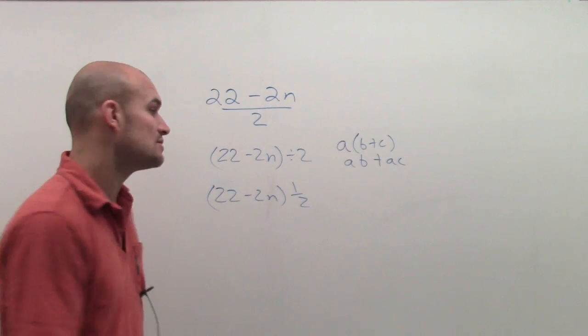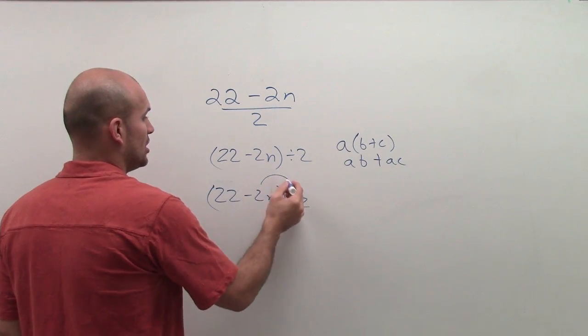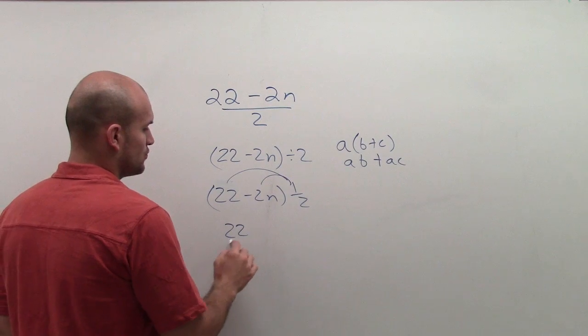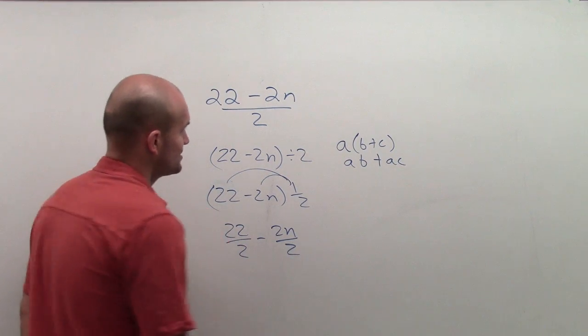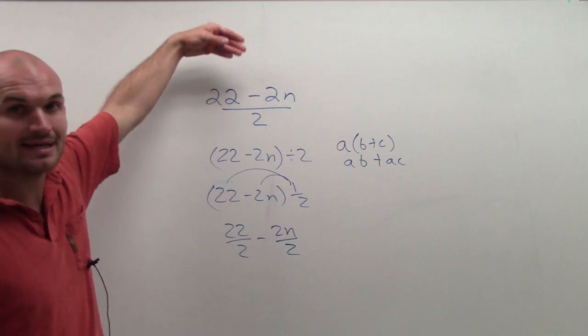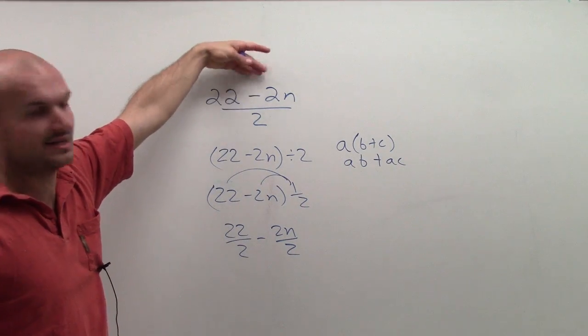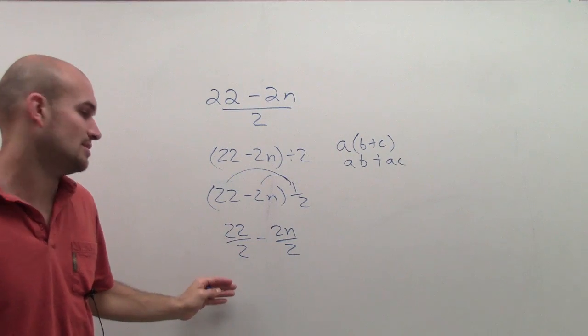Now I can apply the distributive property, which tells me I'm going to multiply my 1 half times both of them. So it's 22 divided by 2 minus 2n divided by 2. So you can see what I did is that's the reason why we can take a fraction like this and split it up to look like this.